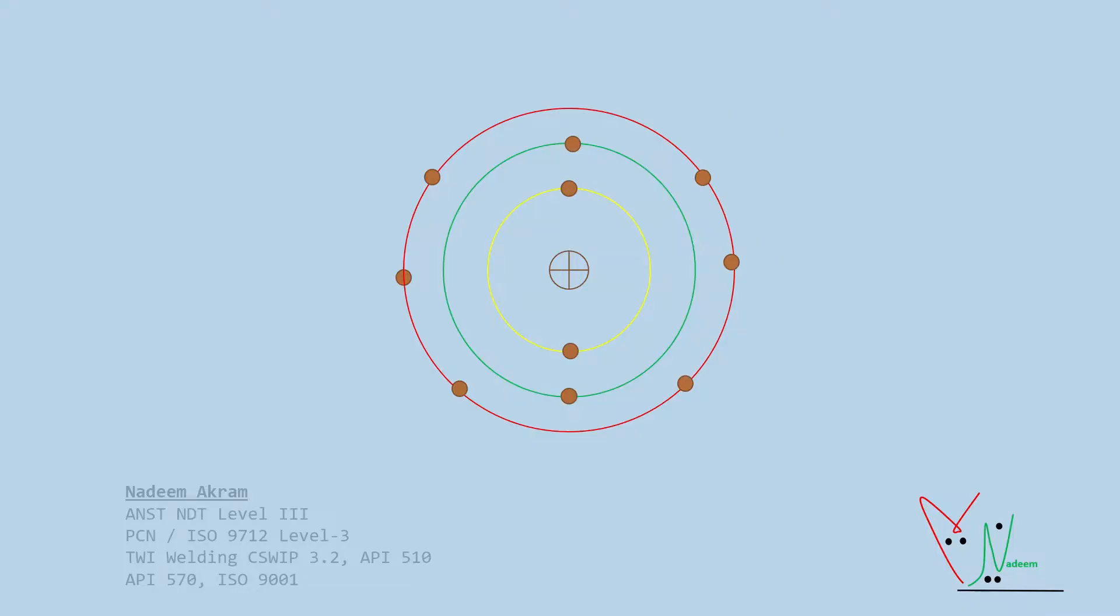Pair production is the creation of an electron and a positron resulting from the interaction of a high-energy photon and a nucleus.